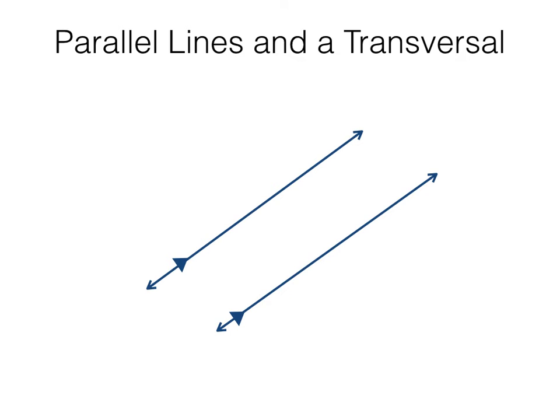Besides measuring the distance between lines to determine if they're parallel, we can also construct a line through two lines and measure the angles formed. A transversal is a line that passes through two or more lines. If a transversal passes through two parallel lines, eight angles are formed as shown, and these angles will have special relationships.